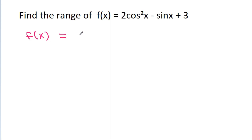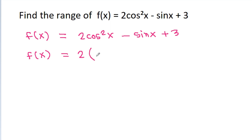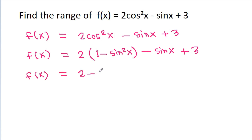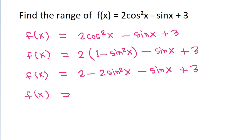We have f(x) = 2cos²x - sinx + 3. We substitute cos²x = 1 - sin²x to get f(x) = 2(1 - sin²x) - sinx + 3, which simplifies to f(x) = 2 - 2sin²x - sinx + 3, and further to f(x) = -2sin²x - sinx + 5.